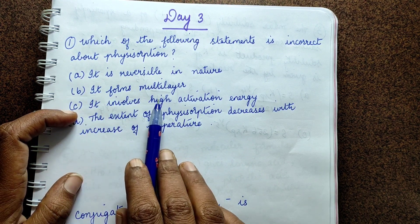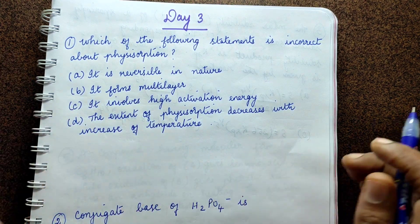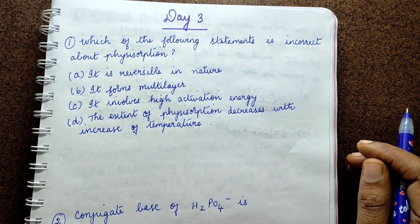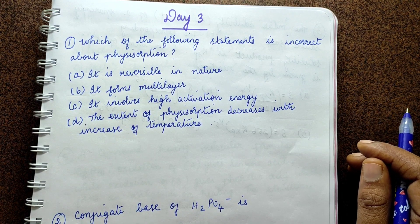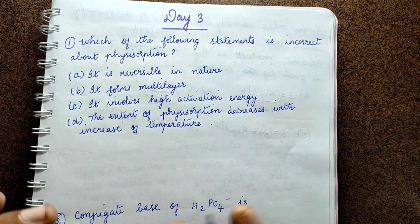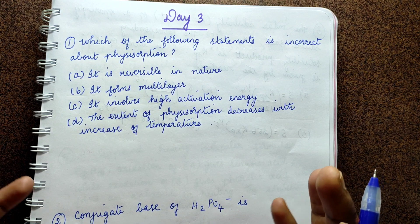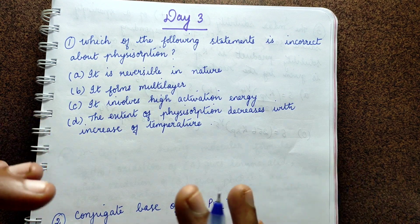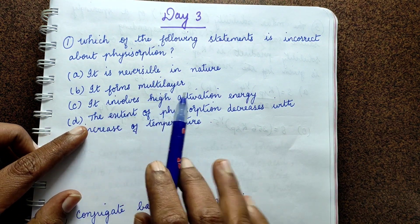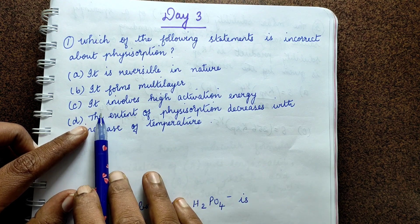Second statement: it forms multi-layer. In chemisorption, chemical bonds are involved, so it forms a single layer — a monolayer. But in physisorption, however much surface area is available, multiple layers get adsorbed. So 'it forms multi-layer' is correct.